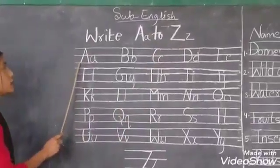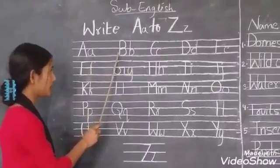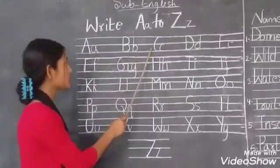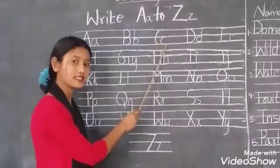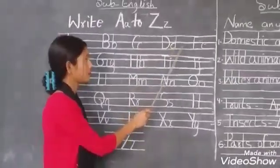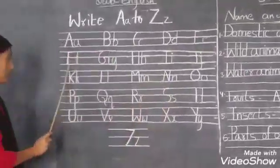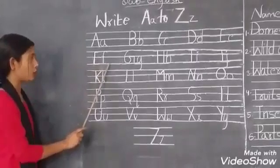Capital A, small a. Capital B, small b. Capital C, small c. Capital D, small d. Capital E, small e. Capital F, small f.